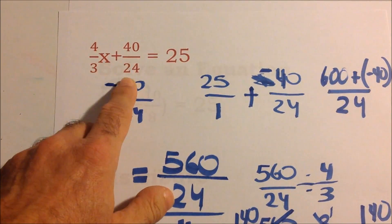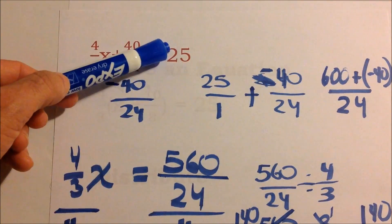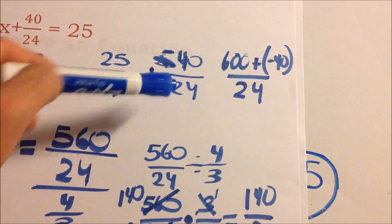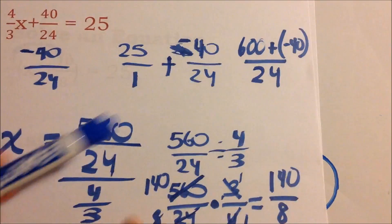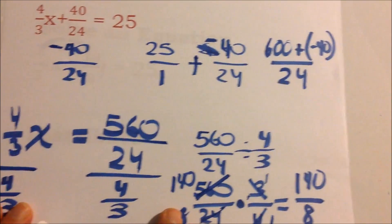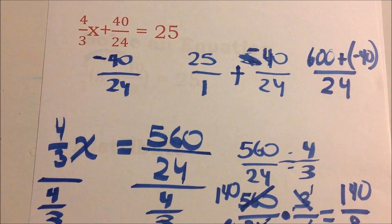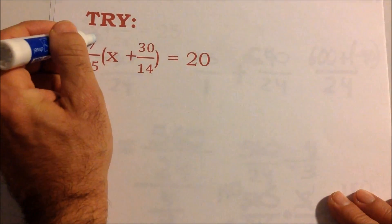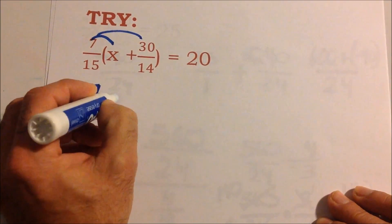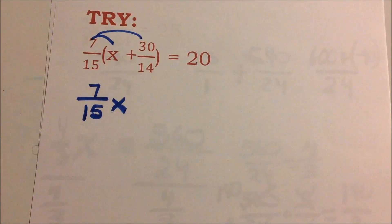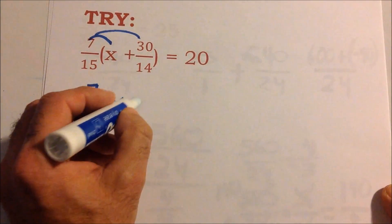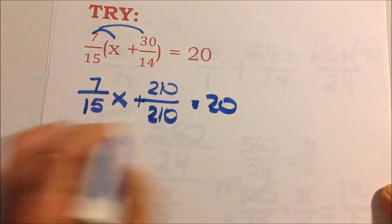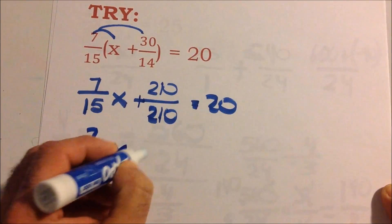Again, whatever we do to one side we do to the other. Rewind the tape on how we did that, and try this next one. Distribute: 7/15 times x gives 7/15 x, and 7/15 times 30 over 14 — 7 times 30 is 210, and 15 times 14 is also 210 — so that fraction equals 1. Therefore, 7/15 x plus 1 equals 20.